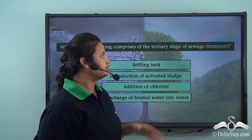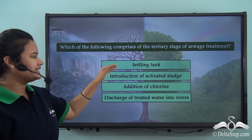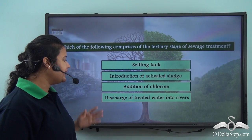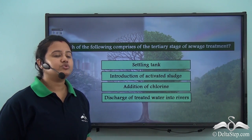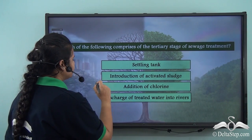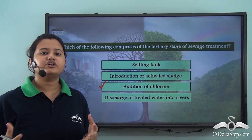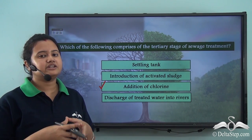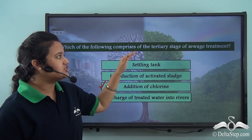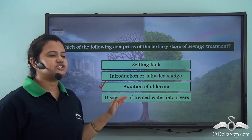Which of the following comprises the tertiary stage of sewage treatment? Is it the settling tank, introduction of activated sludge, addition of chlorine, or discharge of treated water into rivers? The correct answer is addition of chlorine. This is done after the first two stages — primary and secondary treatment — and is the defining part of the tertiary stage.